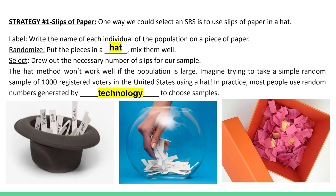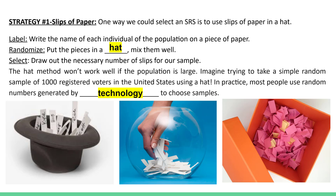The first strategy we're going to talk about is the most low-tech: slips of paper and a hat, or a bowl, or a box — whatever you prefer. If you were asked to describe how to take a simple random sample using slips of paper and a hat, there are three steps. First, we label — we would write the name of each individual of the population on a piece of paper.